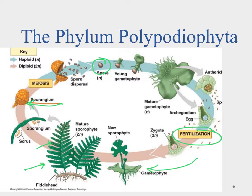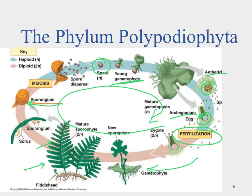The haploid spores grow into a young gametophyte. The gametophyte matures and forms the antheridium and the archegonium — where we form sperm and egg — and fertilization occurs, continuing the cycle. With the ferns, because they're vascularized they're able to get a lot bigger. They can transport water from the roots up to the fronds, and also transport the energy made through photosynthesis in the fronds down through the rest of the plant.